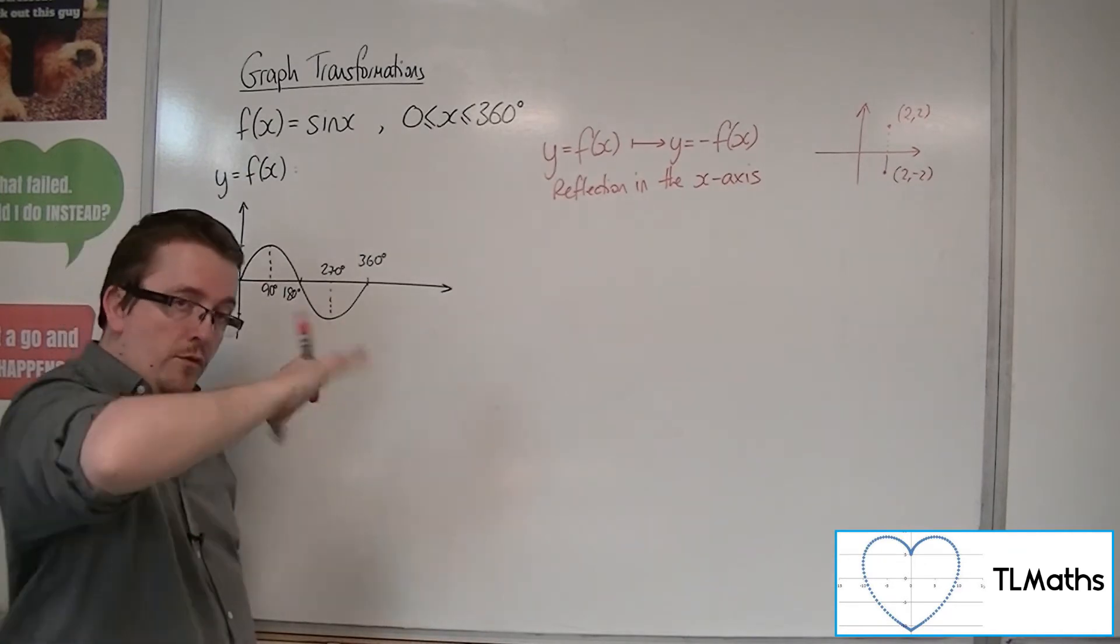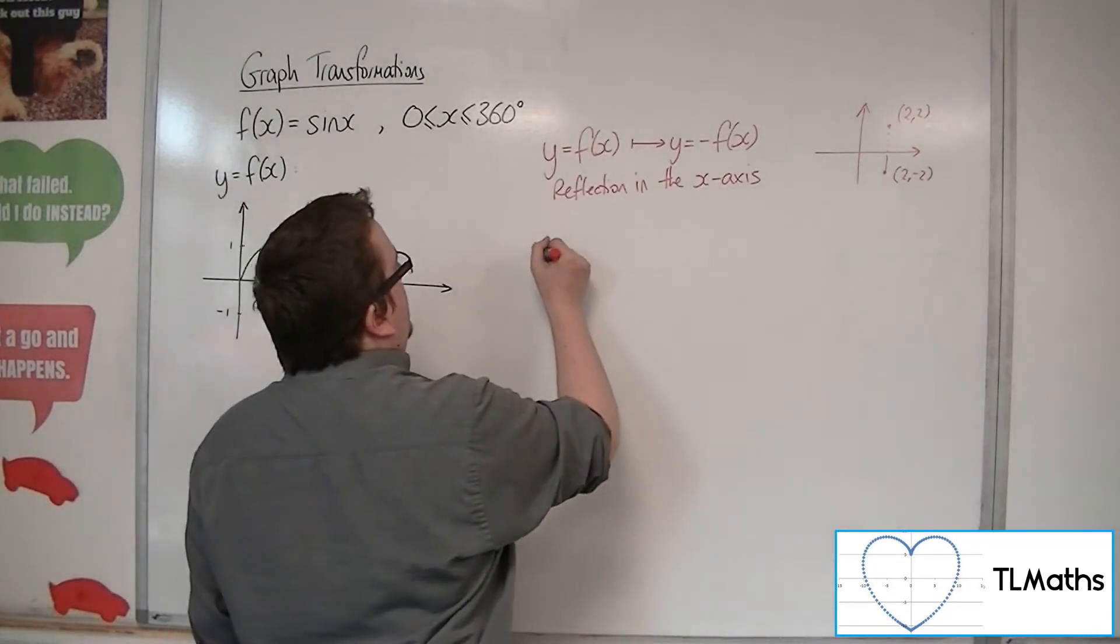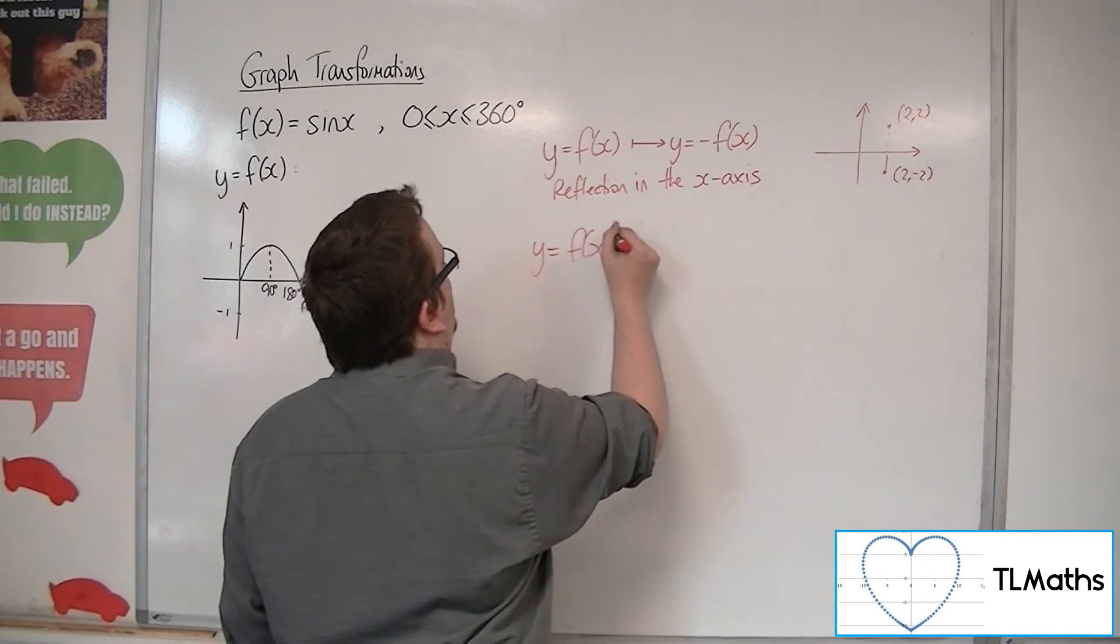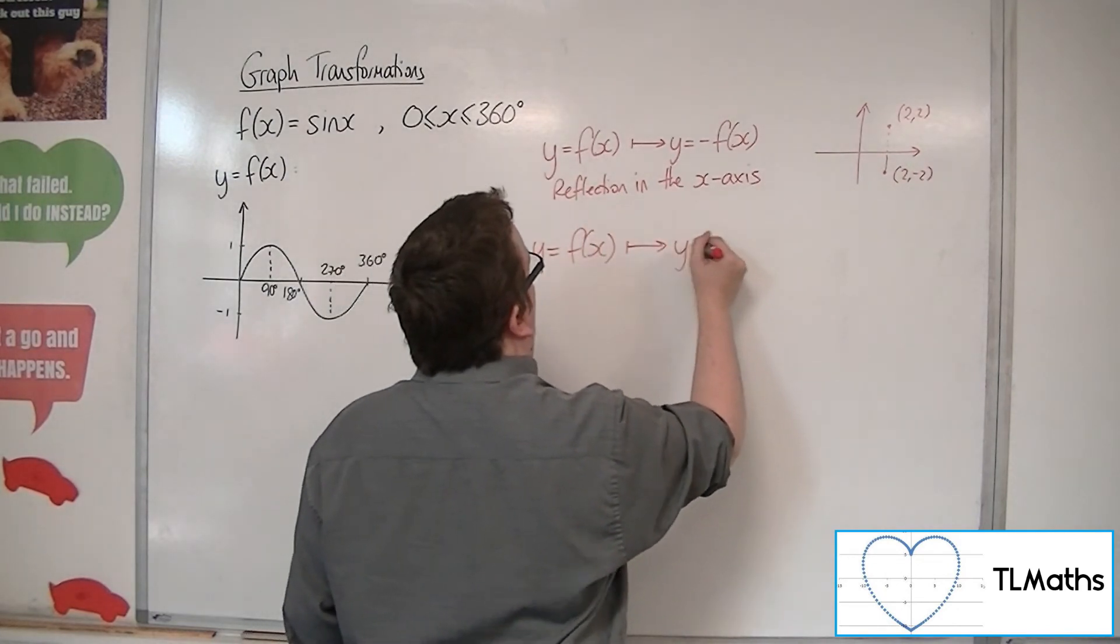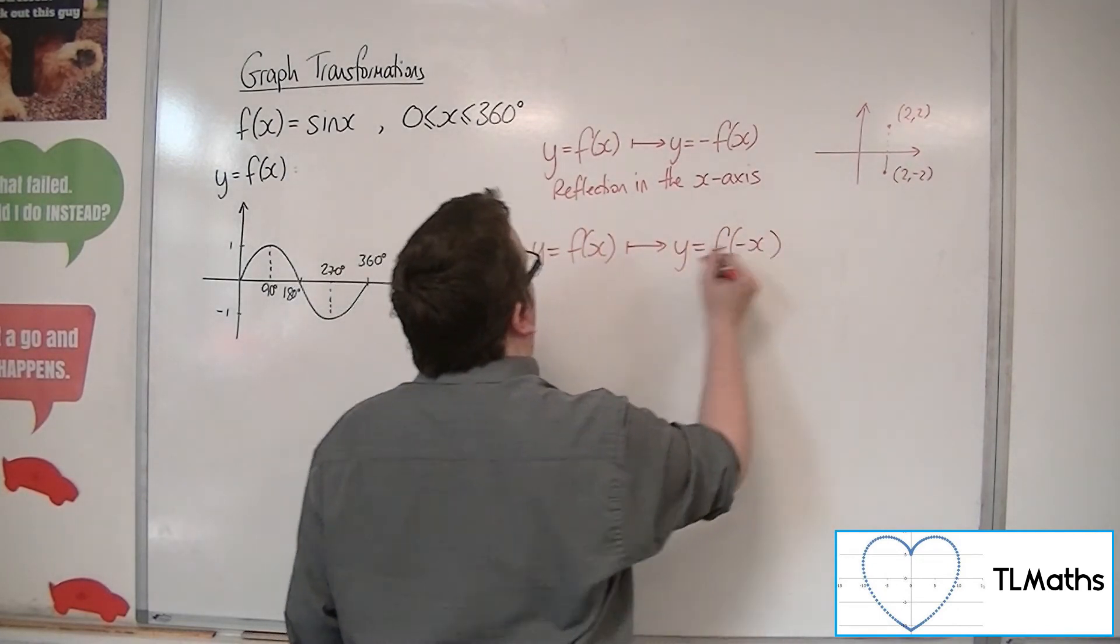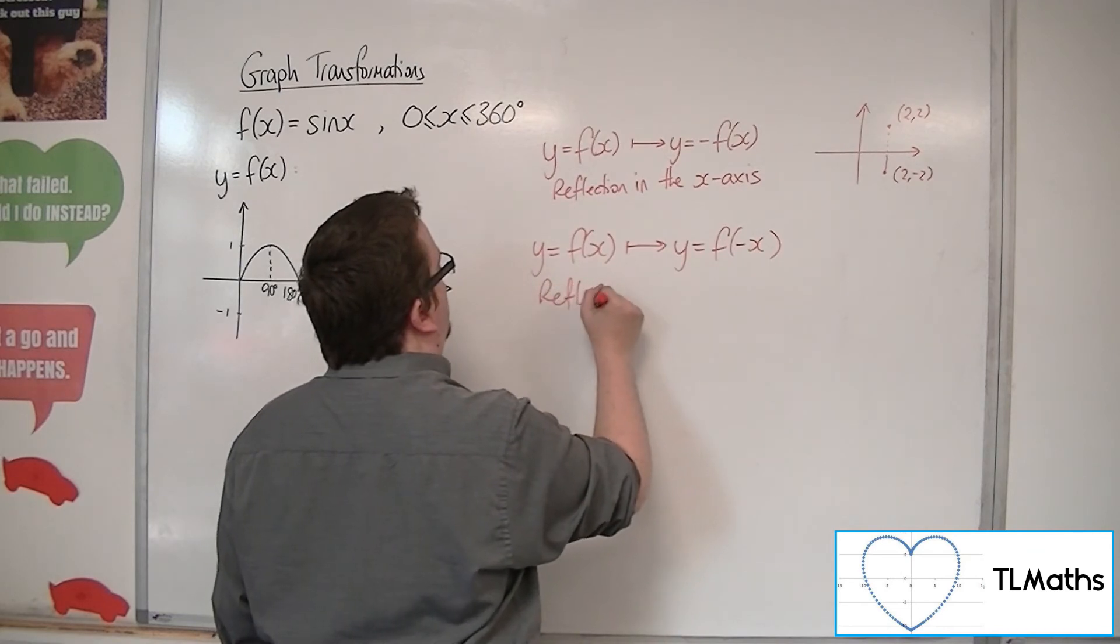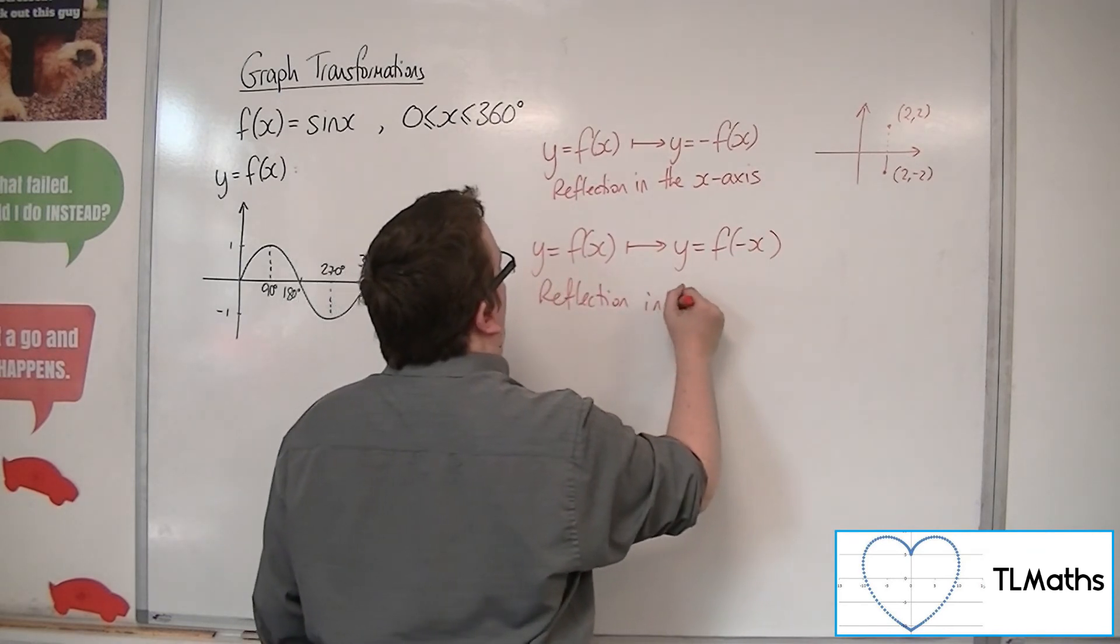OK, so it's a reflection in the x-axis. So the other type was y equals f of x being transformed to y equals f of minus x. And this was a reflection in the y-axis.